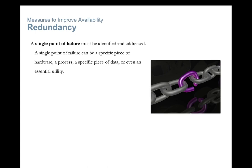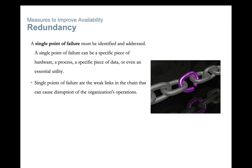A single point of failure can be a special piece of hardware, a process, a specific piece of data, or even an essential utility. A single point of failure is the weak link in the chain that can cause disruption of the organization's operations. Generally, the solution is to modify the critical operation so that it does not rely on a single element. The organization can also build redundant components into the critical operation to take over the process should one of these points fail.